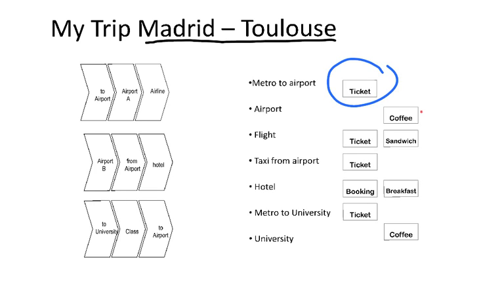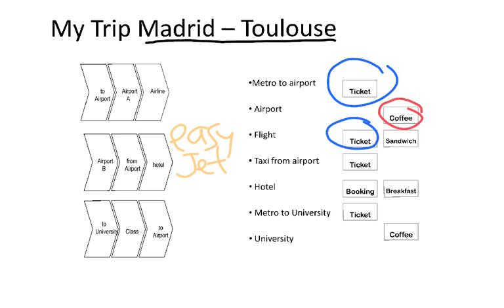At the airport I had plenty of time, so I decided to have a coffee before getting on board the airline EasyJet. On my EasyJet flight, I had bought the ticket beforehand online and they didn't offer any free food on board, so as I was hungry I bought a sandwich on this one-hour flight between Madrid and Toulouse.